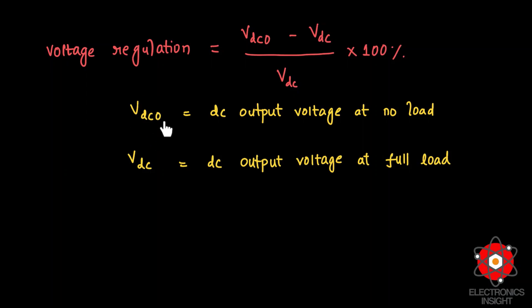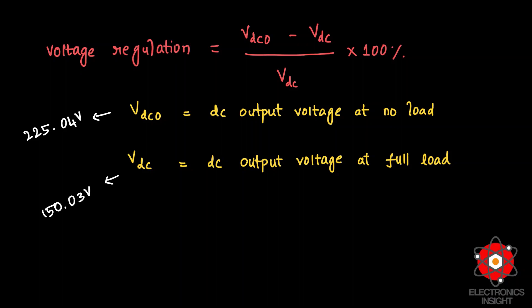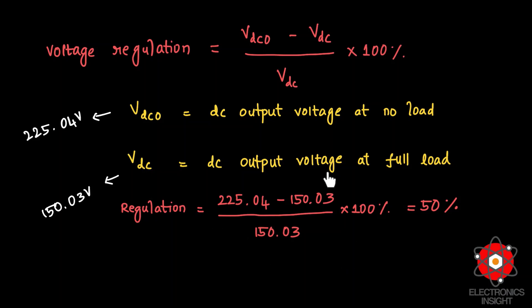Voltage regulation equals (V_dc(no load) minus V_dc(full load)) divided by V_dc(full load), times 100%. With V_dc(no load) as 225.04 volts and V_dc(full load) as 150.03 volts, substituting all values gives a total voltage regulation of 50%.